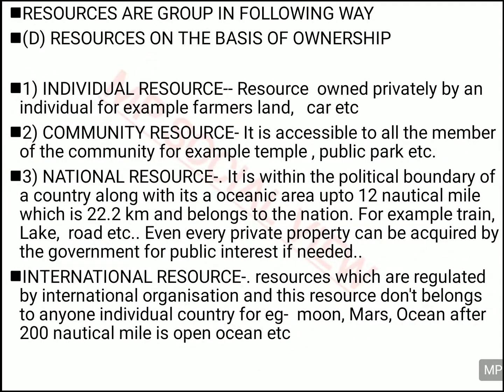The fourth basis of classification is ownership — who is the owner of the resource. Under this, there are four types. Individual resources are private, like my car, my land, a farmer's land, or a neighbor's property. Community resources are used by the whole community living in that area — for example, a park or a temple in a locality used commonly by everyone in that community.